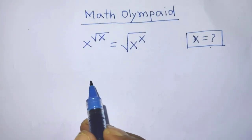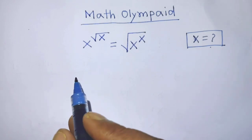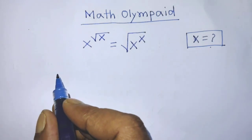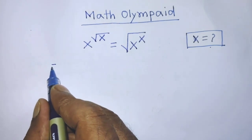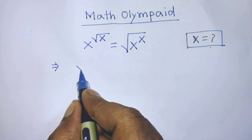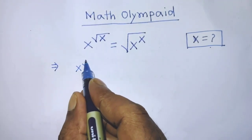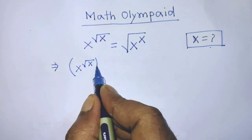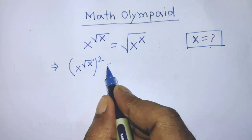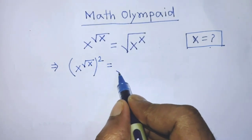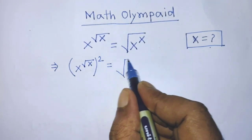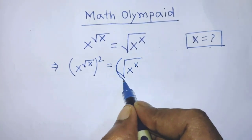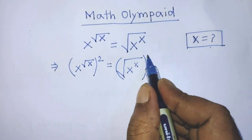In the first step of the solution, we have to take square on both sides of this equation. Then it will be x to the power square root of x, whole to the power 2, is equal to square root of x to the power x, whole to the power 2.